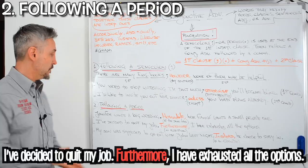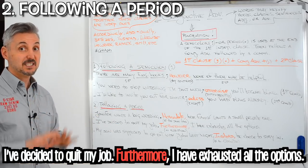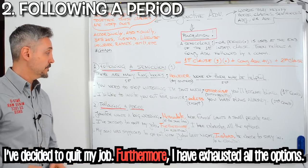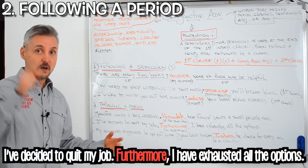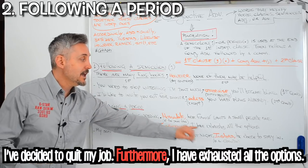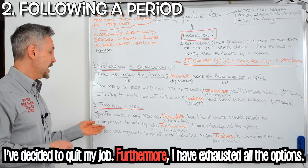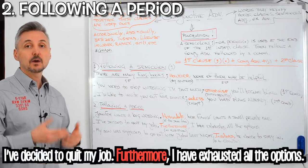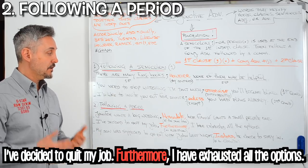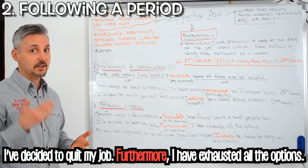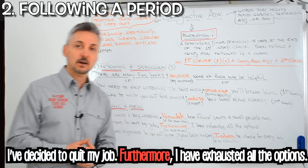Let's look at another example: 'I've decided to quit my job. Furthermore, I have exhausted all the options.' 'Furthermore' means 'in addition'. So 'I've decided to quit my job' is the first clause, then a period, then 'furthermore' as the conjunctive adverb, then a comma, and 'I have exhausted all the options' is the second clause.